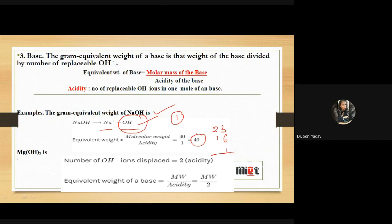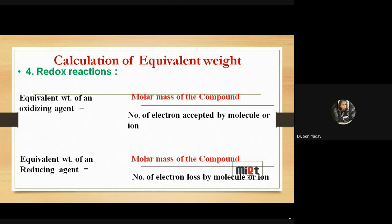Ise hum represent karte hain acidity of the base se. Ab Mg(OH)₂ ko agar dissociate karein to Mg²⁺ + 2OH⁻ ho jaayega. Mg(OH)₂ mein replaceable OH⁻ ions kitne? 2 hain. To Mg(OH)₂ ka total molar mass likhenge aur 2 se divide karenge — equivalent weight of magnesium hydroxide count ho jaayega.